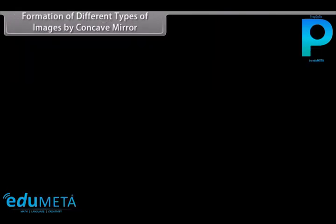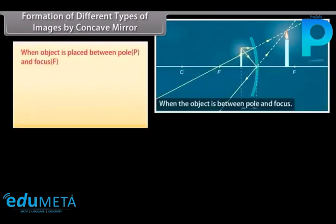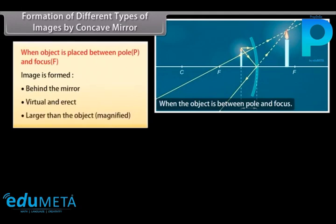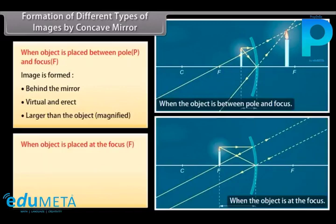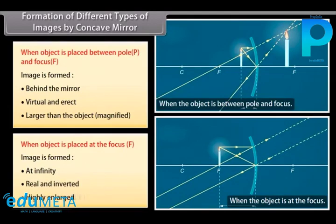Formation of different types of images by concave mirror. When the object is placed between pole P and focus F, the image is formed behind the mirror — virtual and erect, larger than the object (magnified). When the object is placed at the focus F, the image is formed at infinity — real and inverted, highly enlarged.